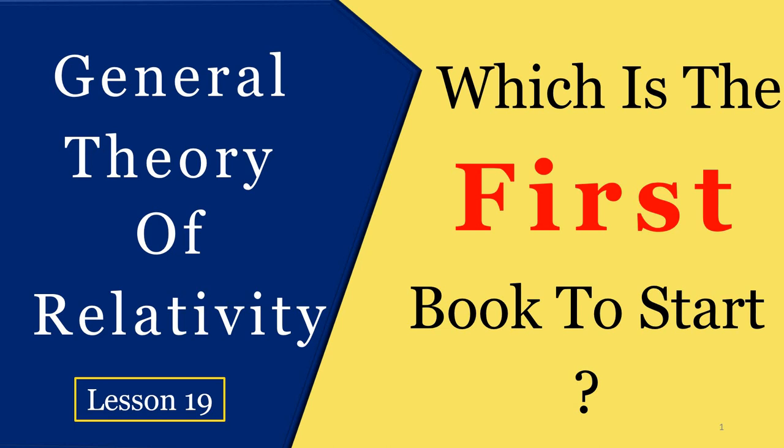Which is the first book you should start reading to learn the general theory of relativity? Among the hundreds and thousands of books available, which is the right book to select? Do you need to learn a lot of mathematics for studying general relativity? Is there any easy way out? In this video I'll be talking about the very first book you should select to learn the general theory of relativity — also what to learn, how to learn, and most importantly how much mathematics you actually need.